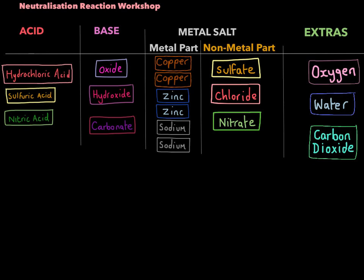All the base components are here: oxides, hydroxides, and carbonates. I've got three examples of metals here: copper, zinc, sodium. The metal with the non-metal part together make metal salts. So the non-metal part would be sulfate, chloride, or nitrate. And then finally, the other little bits we add to the equation, such as oxygen, water, and carbon dioxide.